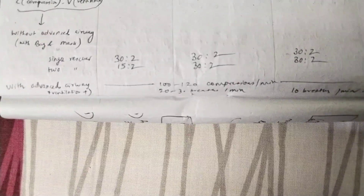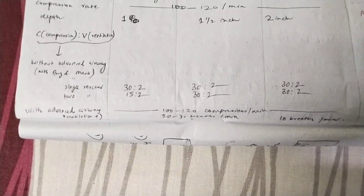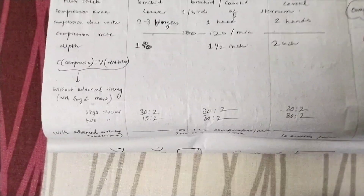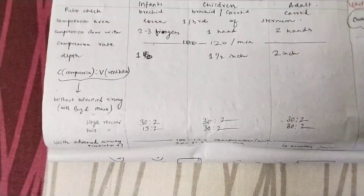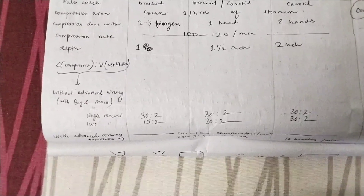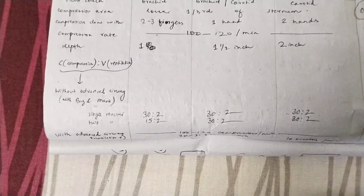If you have an advanced airway — a ventilator — give 100 to 120 chest compressions per minute as usual. For ventilation rate: give 20 to 30 breaths per minute for infants or children, but only 10 breaths per minute for adults. This is the overall background you need before studying the ACLS protocol.